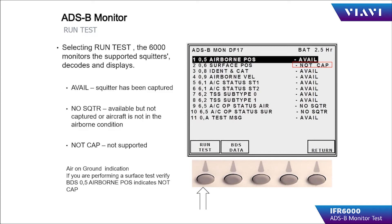The responses to the interrogations will be indicated by the green LED flashing. This is an attempt of the IFR-6000 to obtain the Mode S address from the aircraft being tested. The aircraft must be in the airborne condition to respond.